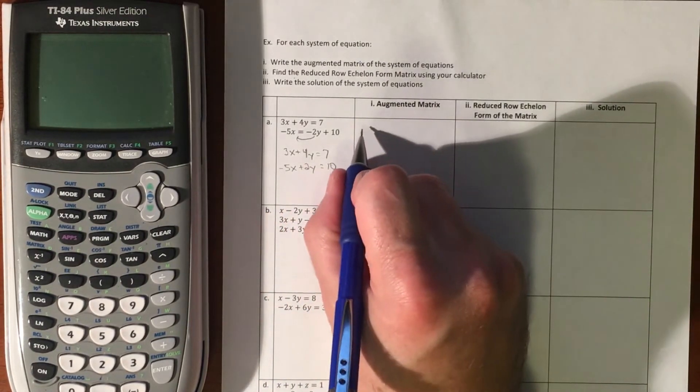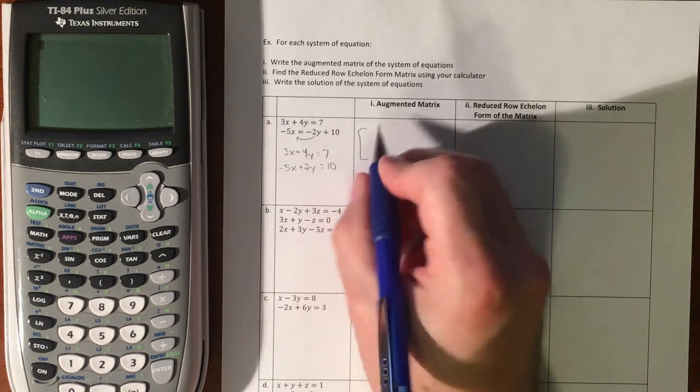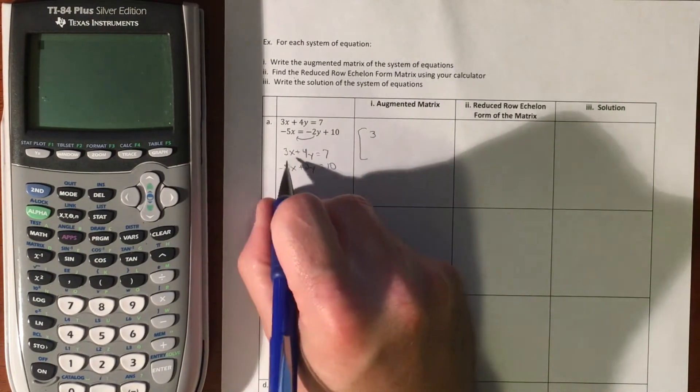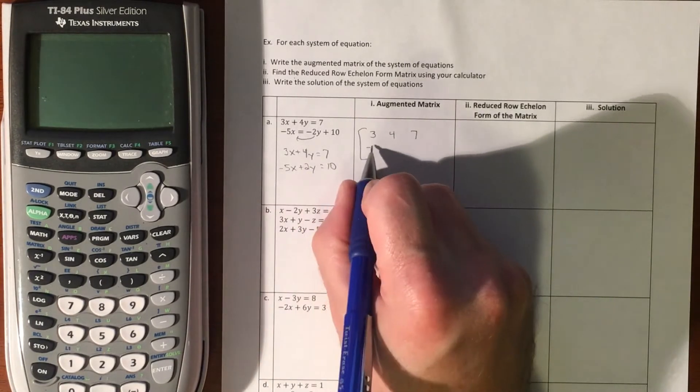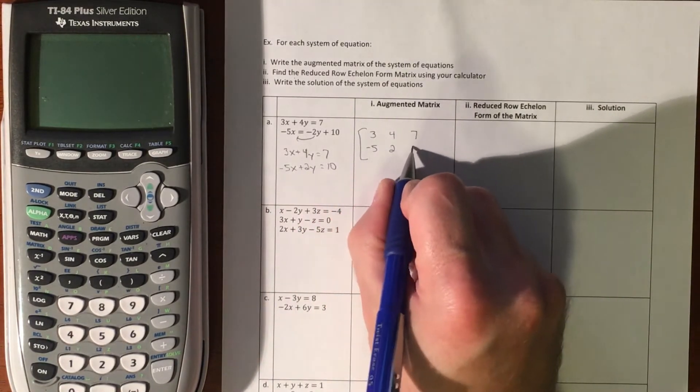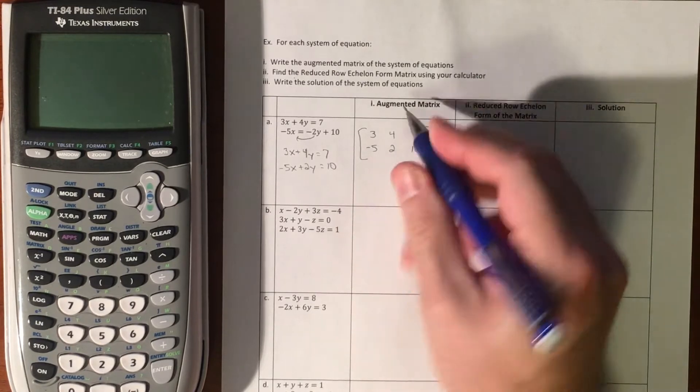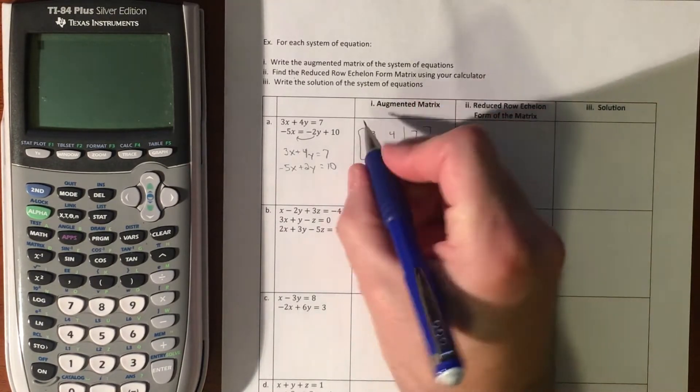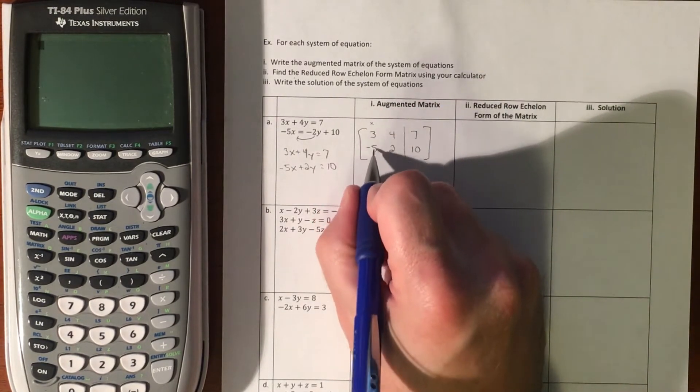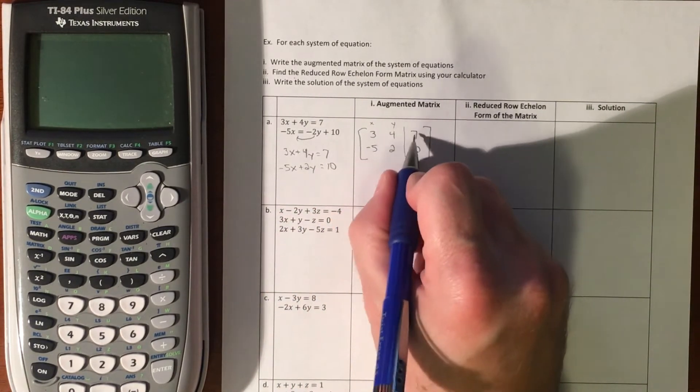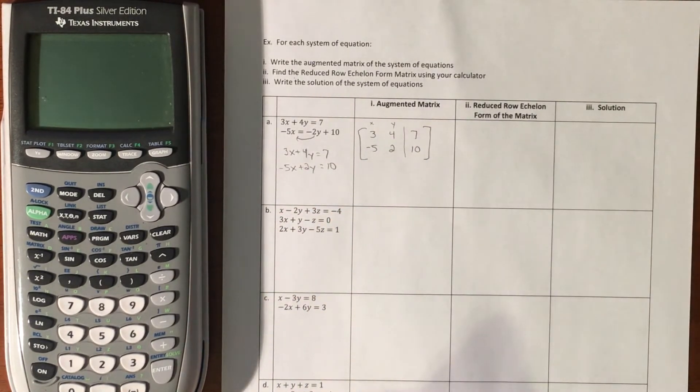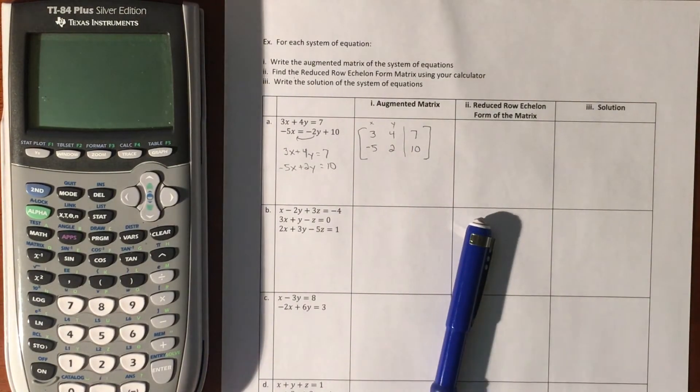My augmented matrix is taking basically just the coefficients: 3, 4, 7, negative 5, 2, 10. This represents our X column, so both the 3 and the negative 5 refer to X's. These are Y's, and then these are what it equals. That is our augmented matrix that we're typing into the calculator.